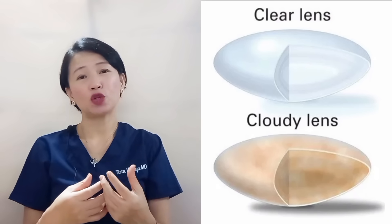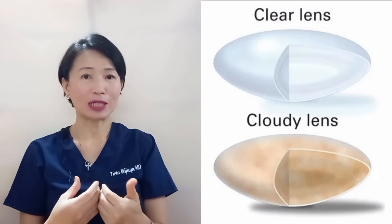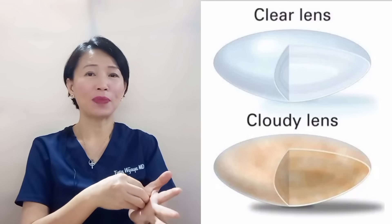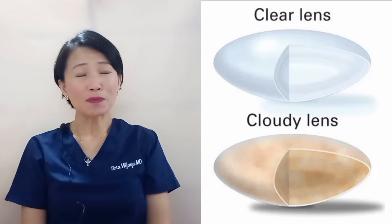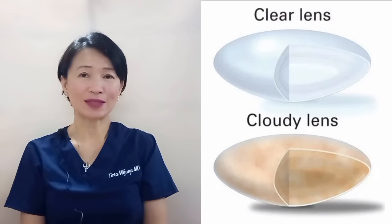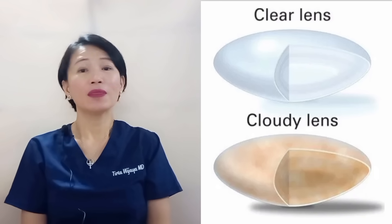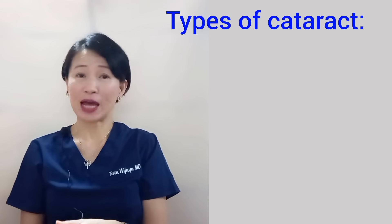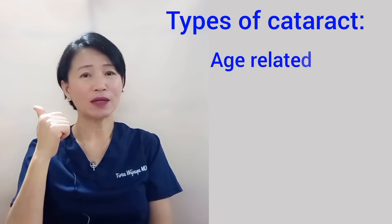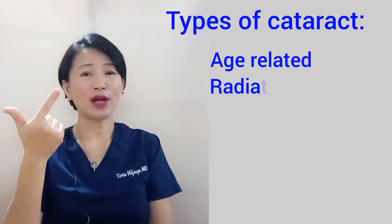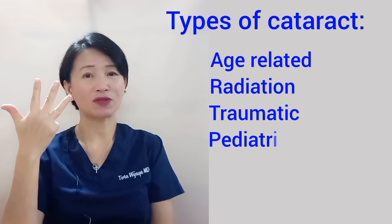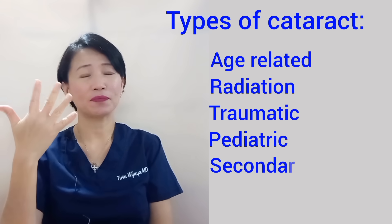Cataract is the condition when our eye lens is cloudy, thus obstructing the light from reaching the retina. It is the leading cause of adult blindness worldwide, especially in developing countries. There are several different types of cataract: age-related cataract, radiation cataract, traumatic cataract, pediatric cataract, and secondary cataract.